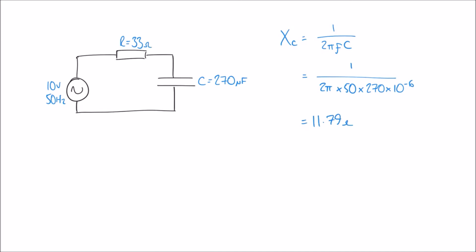Some textbooks and websites quote the reactance of a capacitor as a negative number, using the formula −1/(2πfC), giving −11.79 ohms. In this case it doesn't really matter, because when we use Z² = R² + X² we're going to square this value, and squaring a negative number makes it positive anyway.